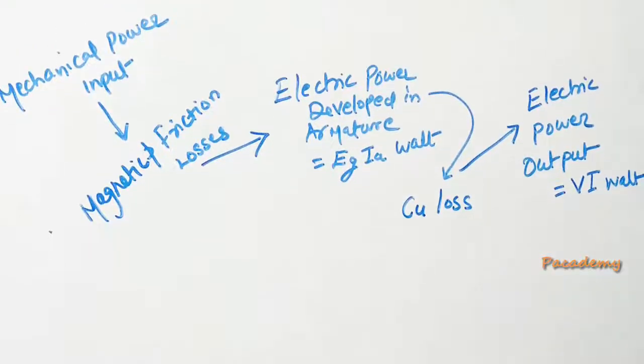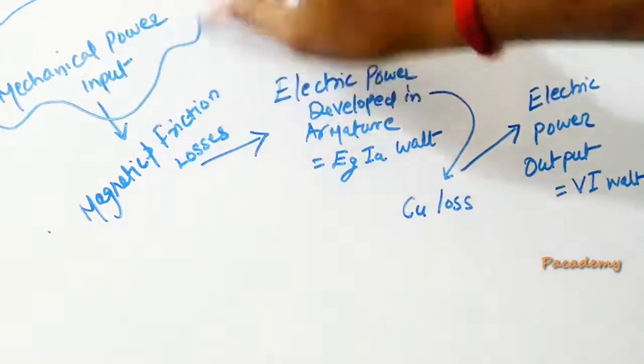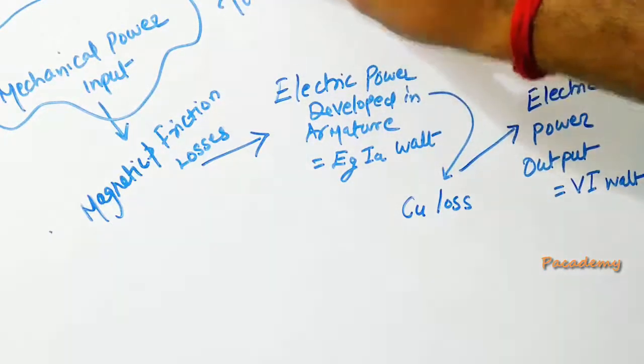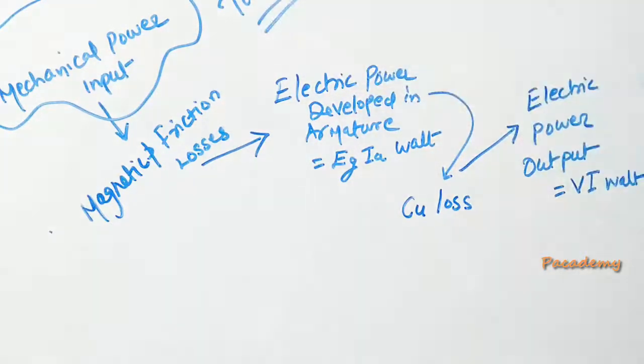This video is about the different power stages of a DC generator. At the first stage, the mechanical power input is given to a generator. This is usually a turbine or a rotor, or it can also be a motor which rotates the shaft of the generator.